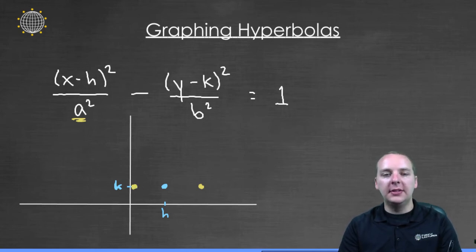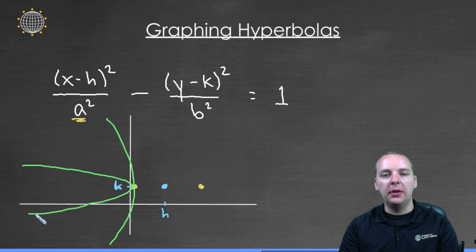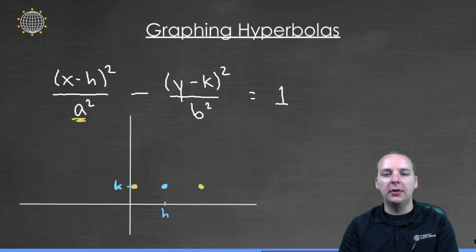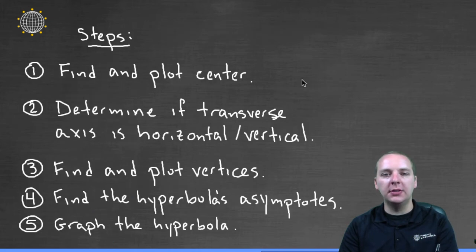And then so now the only thing left is to decide, is this a very wide hyperbola? Or is this a very narrow hyperbola? Or is it somewhere kind of in the middle? Like how much bend does this guy have in particular?